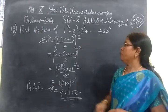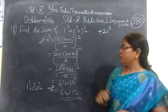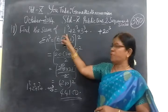Find the sum of 1 cube, 2 cube, 3 cube, etc. plus 20 cube. This is very very easy sum. The sum of the cube number.